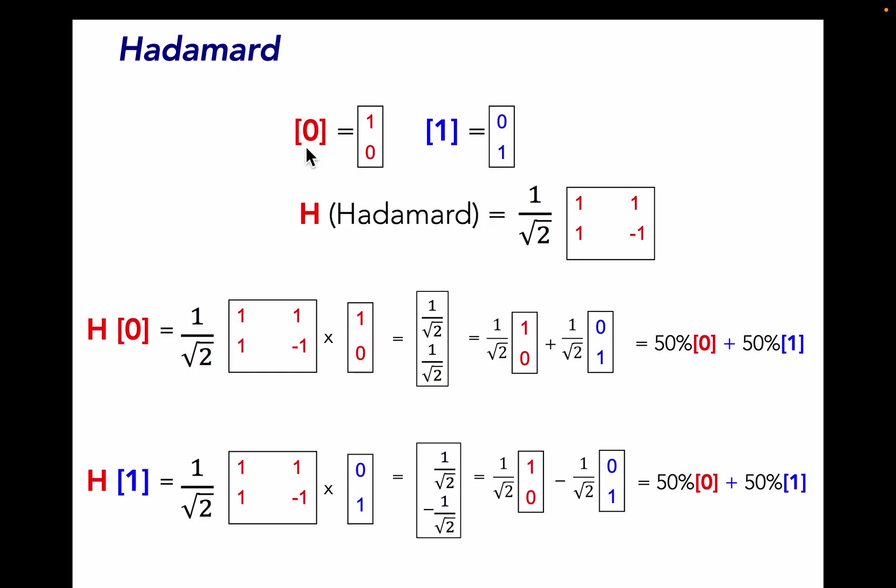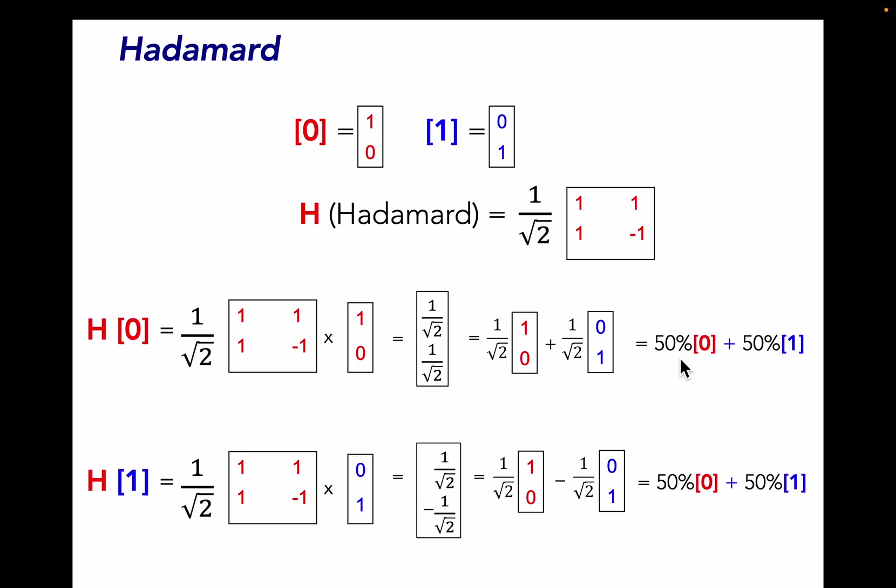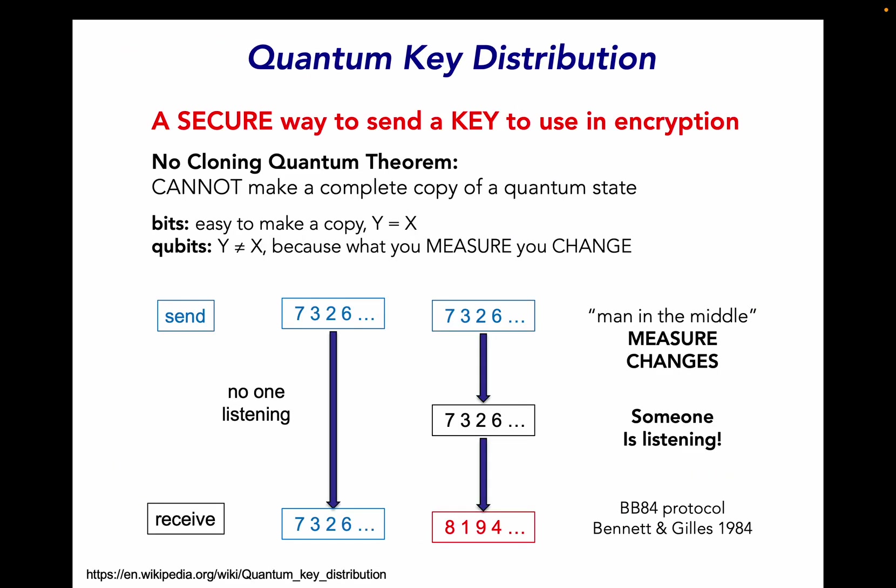A more complex operator here is called the Hadamard operator. When we operate on a 0 we make a combination now of both the [1,0] and the [0,1] state. The square of this is how often when we measure something we'll find this state and how often we'll find that state. So the Hadamard operator has turned a 0 into something that's 0 half the time and 1 half the time. In fact if we do a Hadamard on a 1 we get a very similar result too. Those can both be used in quantum key distribution which is a secure way to send a key to use in other encryption systems later.